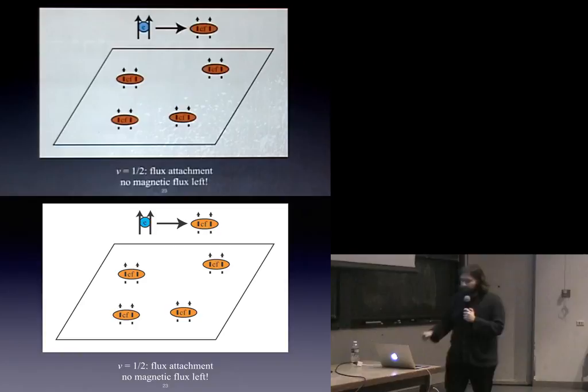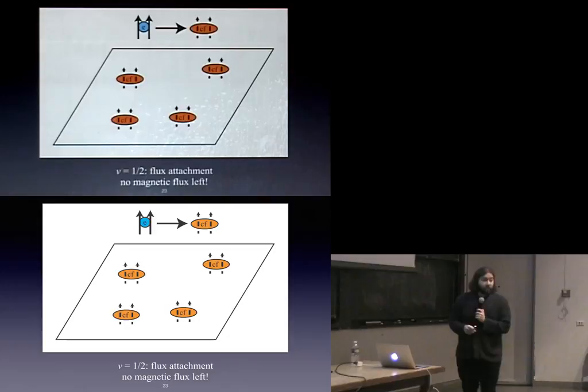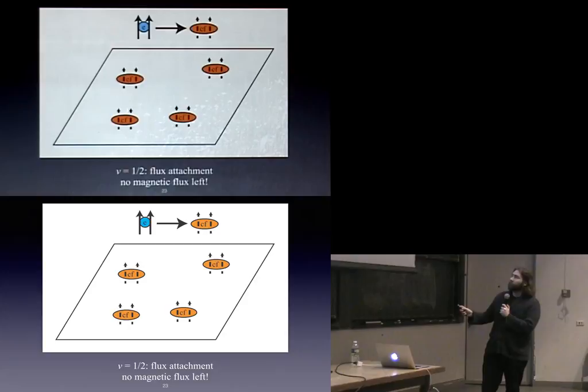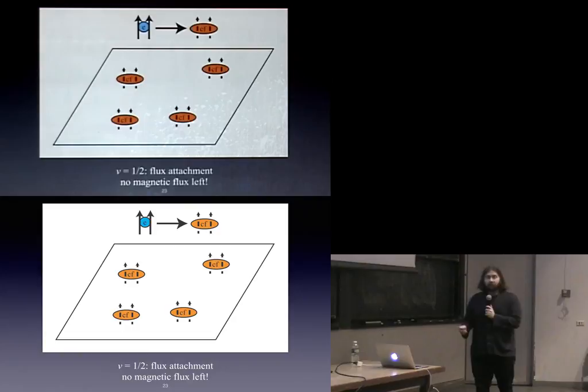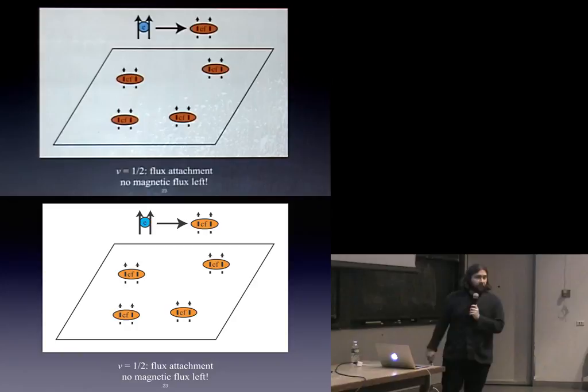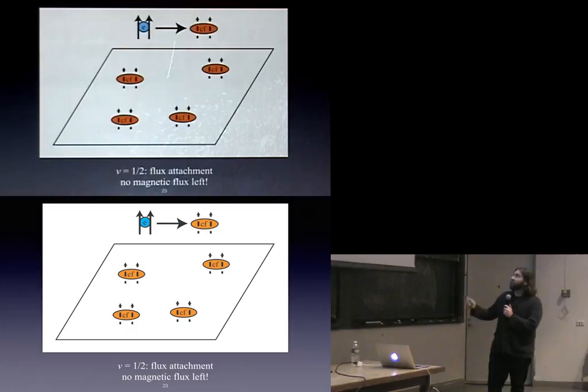This new object has eaten all of the magnetic field lines, which means there's no magnetic flux left. So even though these particles are charged — because they are built out of an electron — they don't feel any magnetic field lines anymore. They've kind of swallowed them all up. This is my picture of how I can have charged particles that don't feel a magnetic field and are effectively neutral. They've swallowed up all of the magnetic field lines.